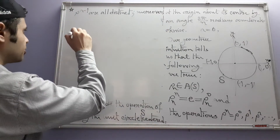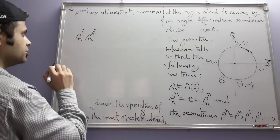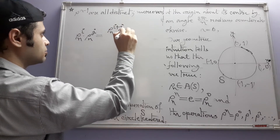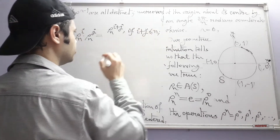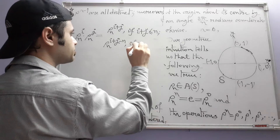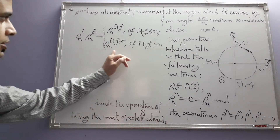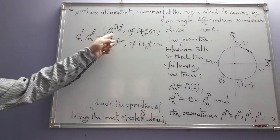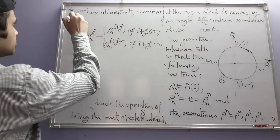The most important part: ρₙⁱ · ρₙʲ equals ρₙⁱ⁺ʲ if i + j ≤ n, and equals ρₙⁱ⁺ʲ⁻ⁿ if i + j > n. This takes some effort to see from intuition, but you can take a small value of n and go through all possible products and verify that this is the case.